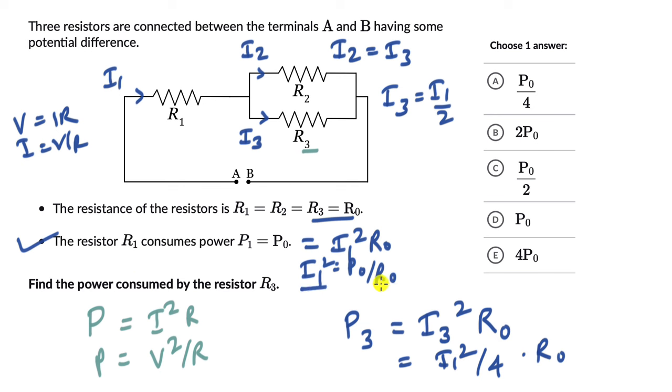Now if we replace I1 square over here, let's see what we get. We get P3 equal to I1 square, instead of that we write P0 divided by R0. There was R0 before and this is being divided by 4. So R0 gets cancelled and this comes out to be equal to P0 divided by 4. So this is option 1.